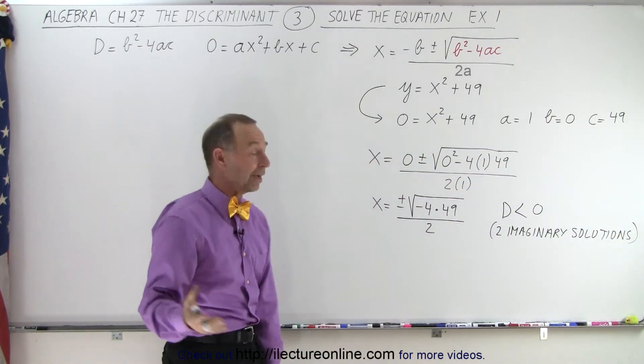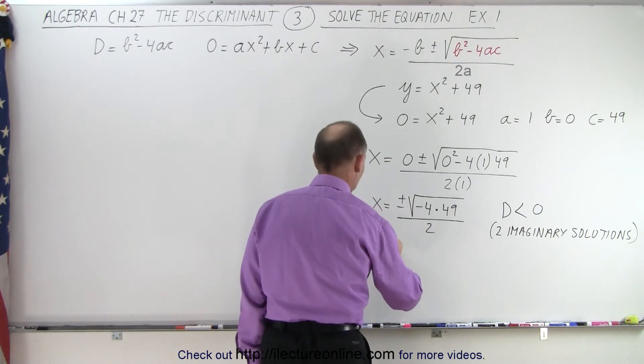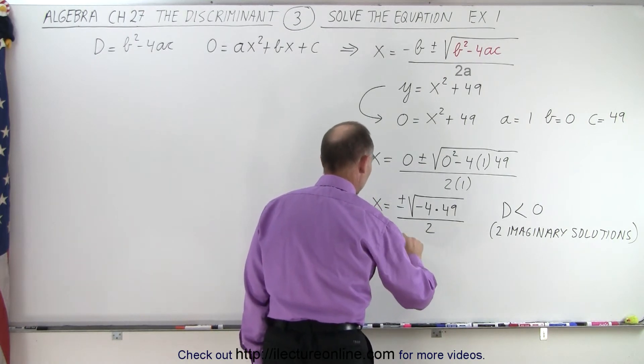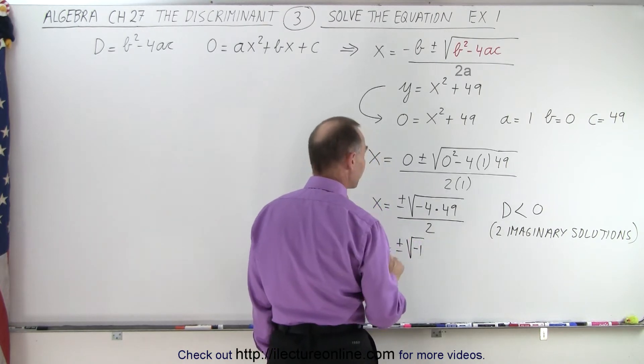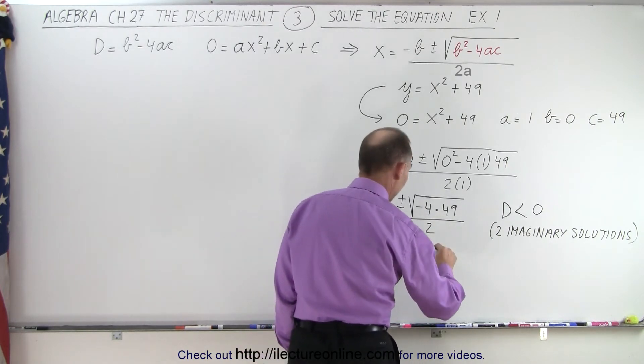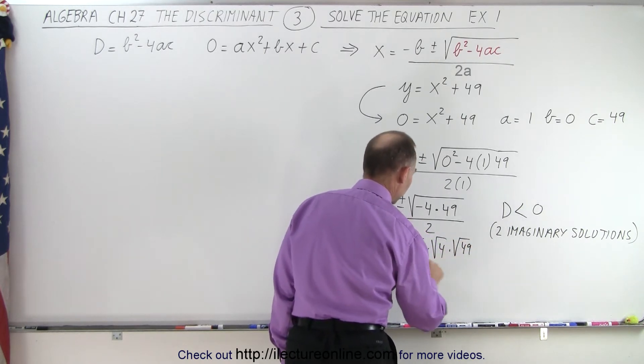Now we just need to figure out what they are. Taking the square root: x = ± √(-1) × √4 × √49 / 2. I'm factoring out the negative 1 from under the square root.